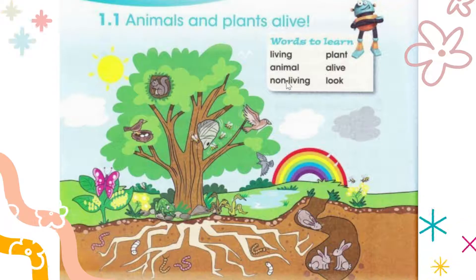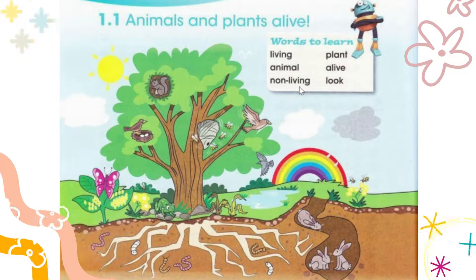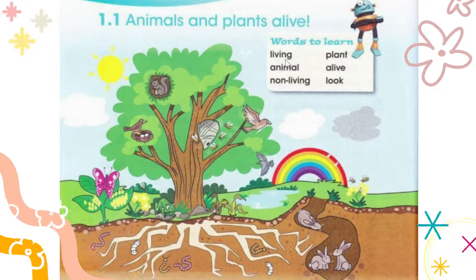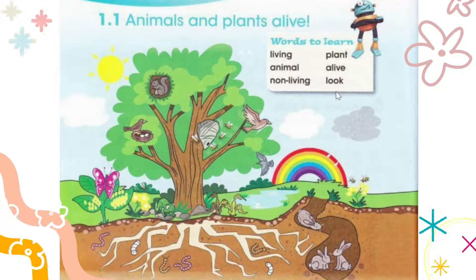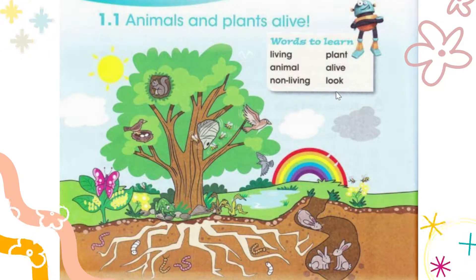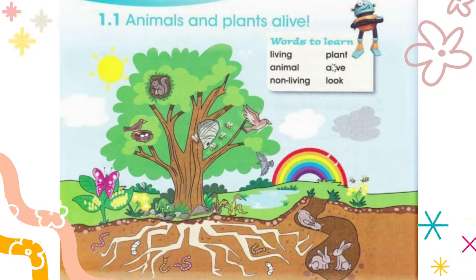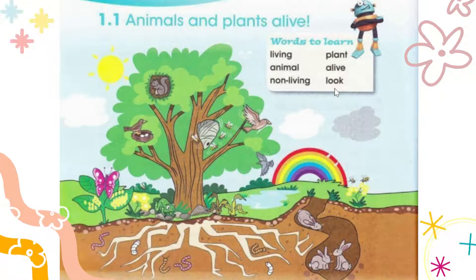The next word is 'non-living' — N-O-N L-I-V-I-N-G. Non-living is the opposite of living. For example, your table, chair, cupboard, your bed — those are non-living. Another word is 'look' — L-O-O-K — when you see with your eyes. So these are the new words you need to remember: living, plant, animal, alive, non-living, look.